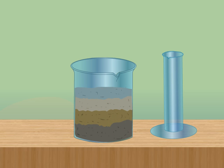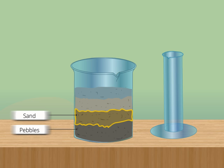Here in the pot, we can see that three layers are formed. These layers are formed from different sized particles of the soil. The bottom layer contains heavy pebbles, while the middle layer contains small particles of sand.